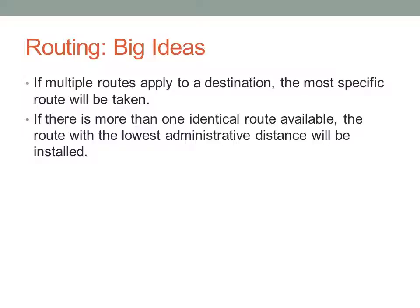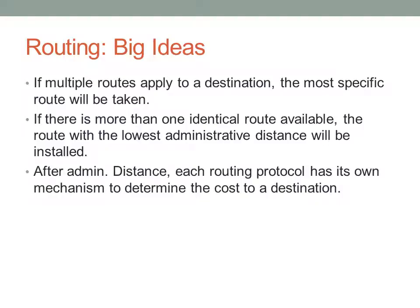Administrative distance is used to distinguish routes coming from different routing protocols or routes added by the user. The administrative distance is set based on the routing protocol or set by you. After administrative distance, each routing protocol has its own mechanism to determine the cost to a destination. With RIP, which we'll be talking about next time, it uses basically a hop count - based on the number of routers that traffic has to pass through, it will try to minimize the number of hops. Whereas EIGRP uses a combination of delay and bandwidth to determine the lowest cost. Each different routing protocol has a different way to determine this cost - I call it metric in most cases.